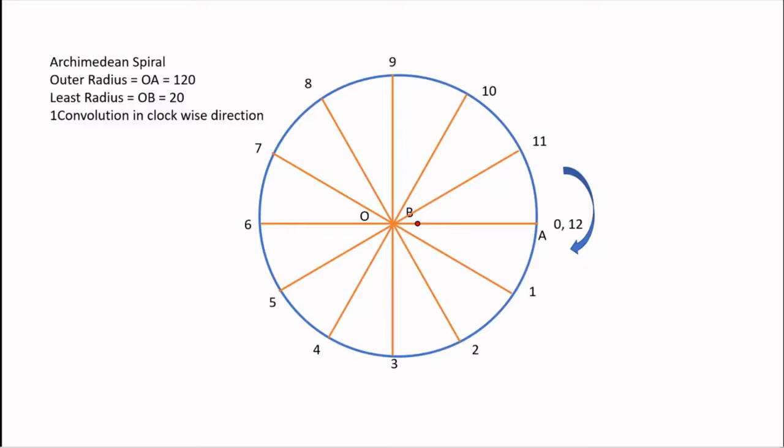Next, I have taken 12 steps as you can see. 0 is the starting and 12 is the last step which coincides, because I would be covering one rotation about the pole A. Hence, I will be taking only 12 steps. If this would have been a problem of 1 and a half convolution, I would have taken further more steps that is 13, 14, 15, 16, 17, 18.